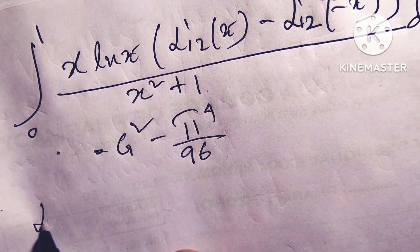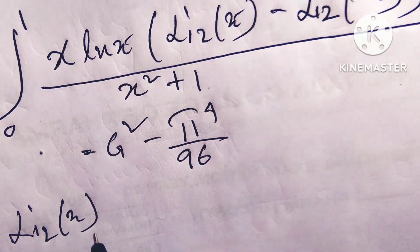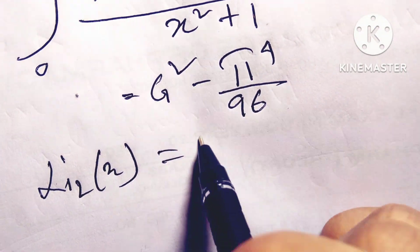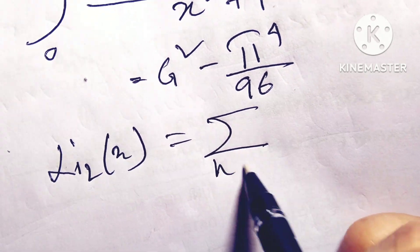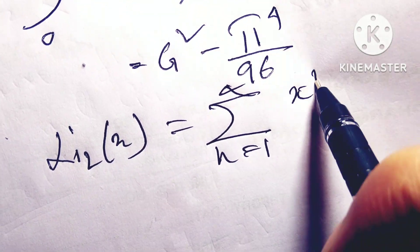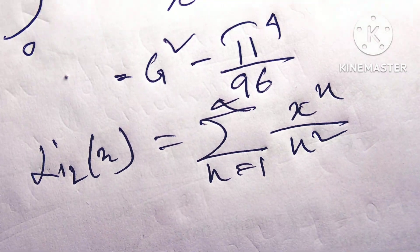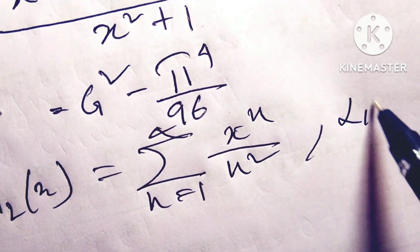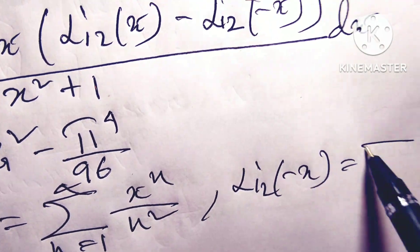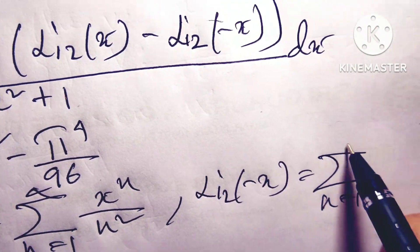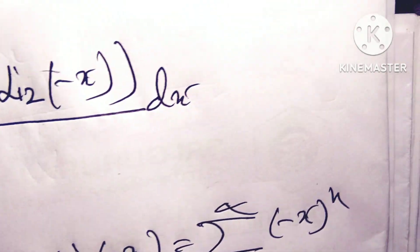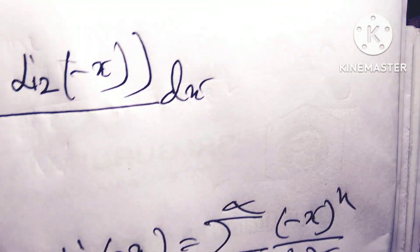First, you have to know the Li₂(x) formula: Li₂(x) equals summation n=1 to infinity of x^n / n², and Li₂(-x) equals summation n=1 to infinity of (-x)^n / n².